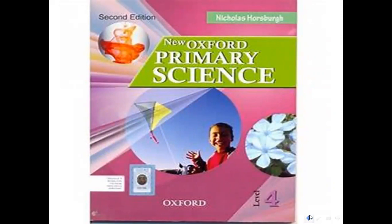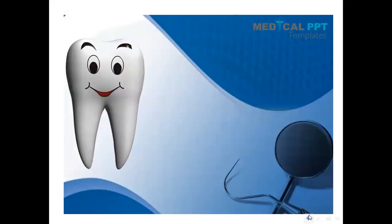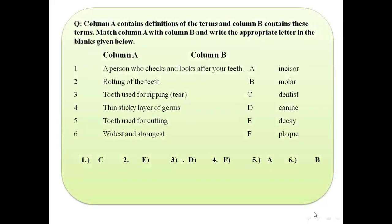Unit number two — Teeth. Here we have the first exercise. Column A contains definitions of the terms and column B contains these terms. Match column A with column B. We have the first sentence: a person who checks and looks after your teeth. The options are: incisors, molar, dentist, canine, decay, or plaque.